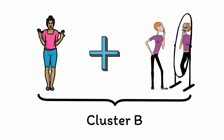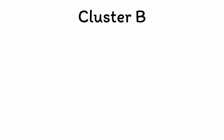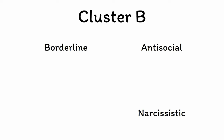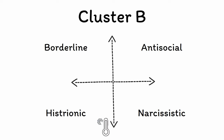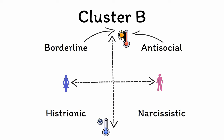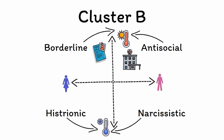Despite these shared roots, there are significant differences in how patients with each disorder will present clinically. The differences between borderline, antisocial, narcissistic, and histrionic personality disorder are based primarily on two things: severity and gender. Borderline and antisocial personality disorders are both incredibly disabling, with many patients finding themselves unemployed, socially isolated, and even repeatedly hospitalized or incarcerated. In contrast, narcissistic and histrionic personality disorders are often less impairing, and many patients are able to hold jobs and support themselves — with dysfunction manifesting primarily in maintaining social relationships.